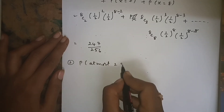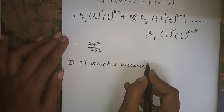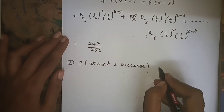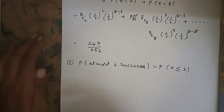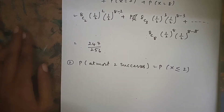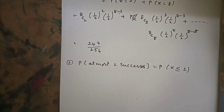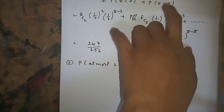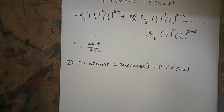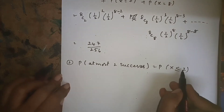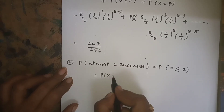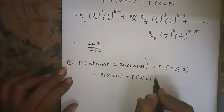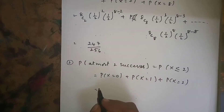The second bit is P(at most 2 successes) = P(X ≤ 2). 'At least' means x or more (e.g., 2 or more apples), while 'at most' is the opposite — P(X ≤ 2) = P(X=0) + P(X=1) + P(X=2).